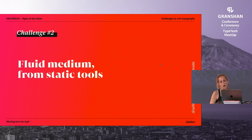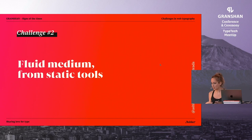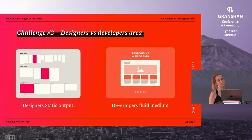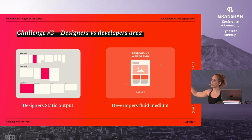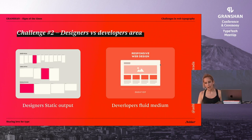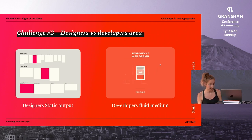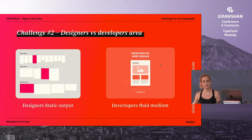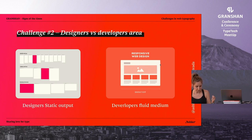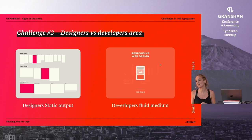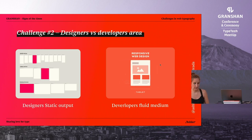That was challenge number one. Now it's challenge number two: we are working in a fluid medium from static tools. This challenge is somehow related to the first one. As designers, we choose some configurations — static ones with some sizes predefined — and that is what we deliver to the developer team. But the developer team needs to convert those static mockups into something fluid, meaning it needs to adapt to the size of the user's browser. A lot of elements in a browser are going to fill the empty space available, and that creates some problems.